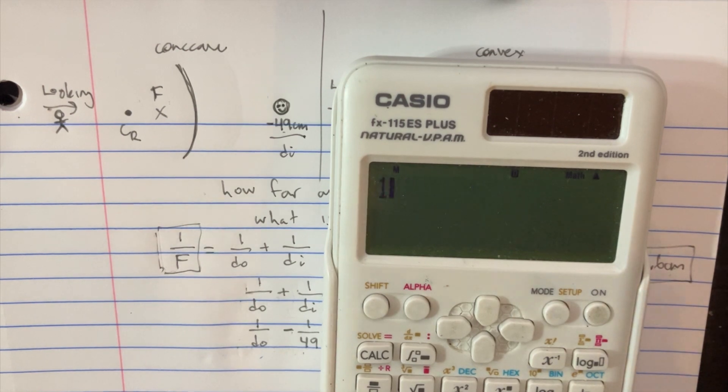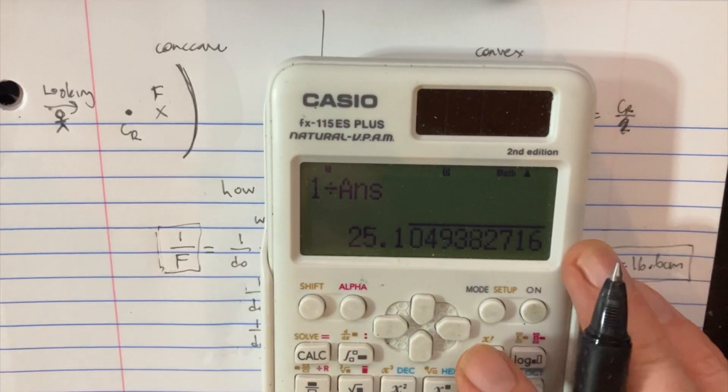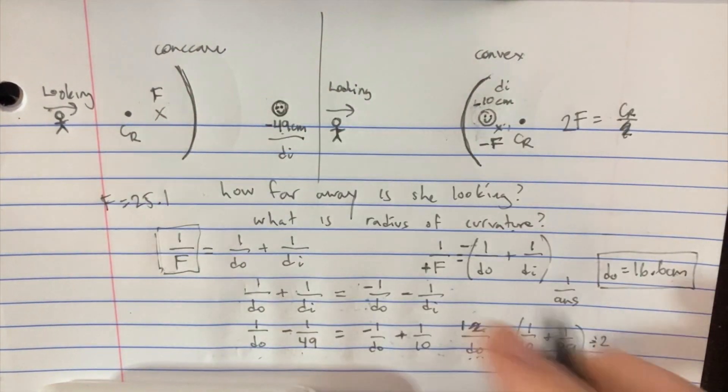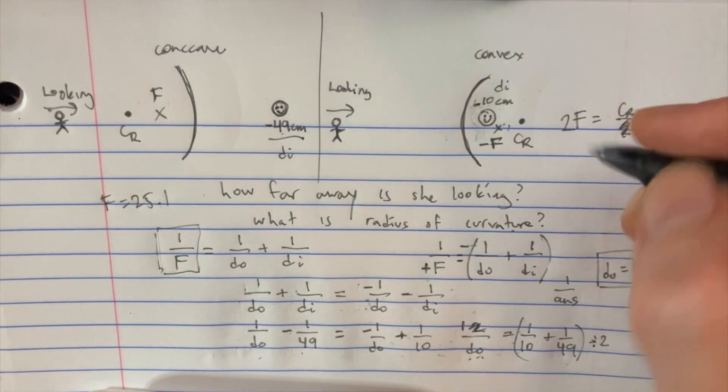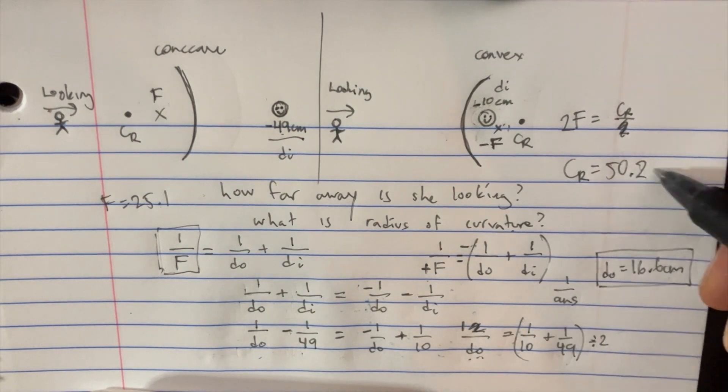And then we're going to do 1 over answer on that side. So that way we get F is equal to 25.1. F equals 25.1. We're going to want to multiply that by 2, so we'll just get 50.2. And that's going to be the radius of the curvature. Centimeters.